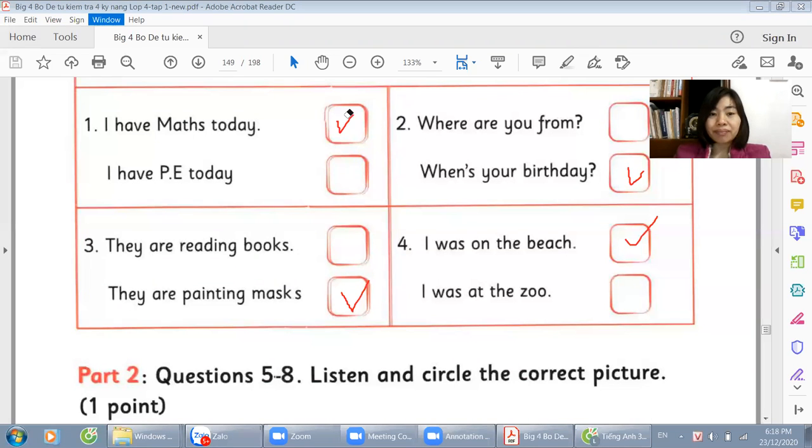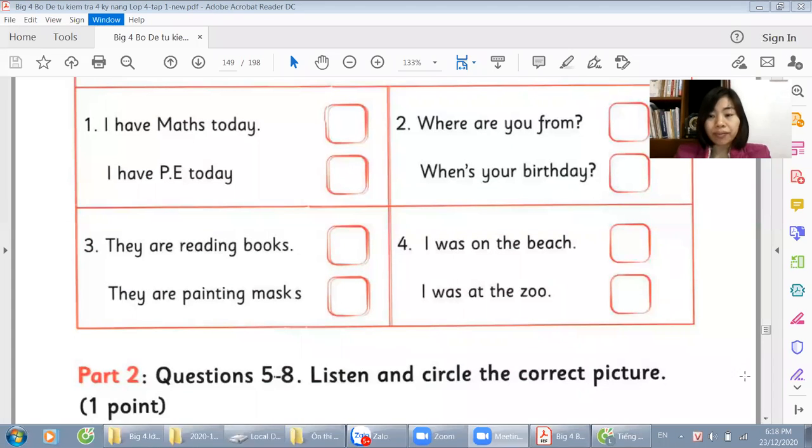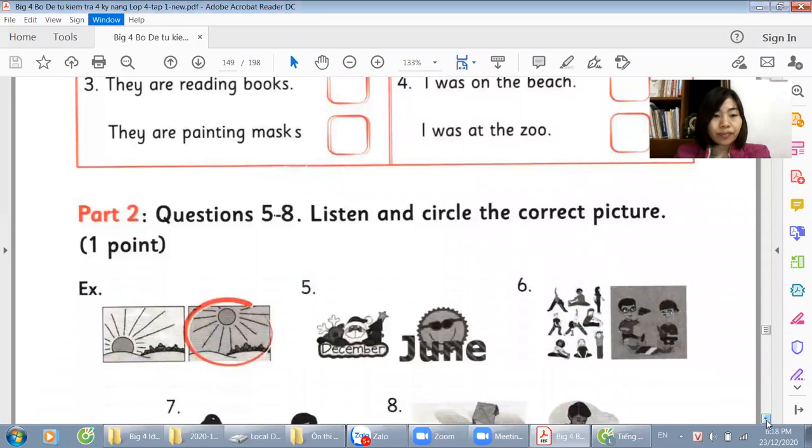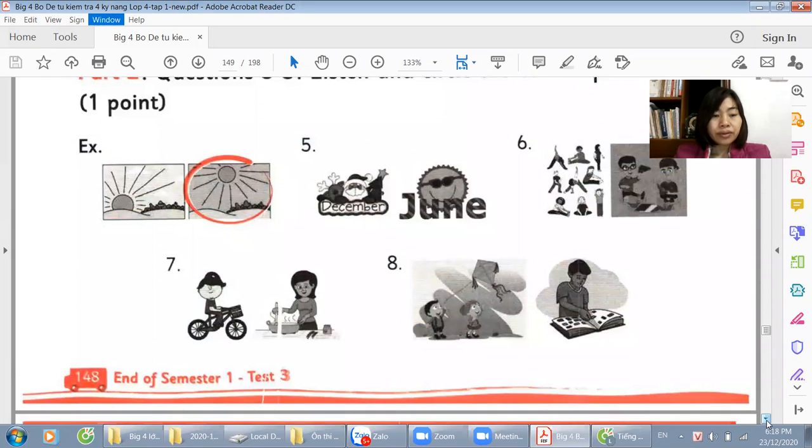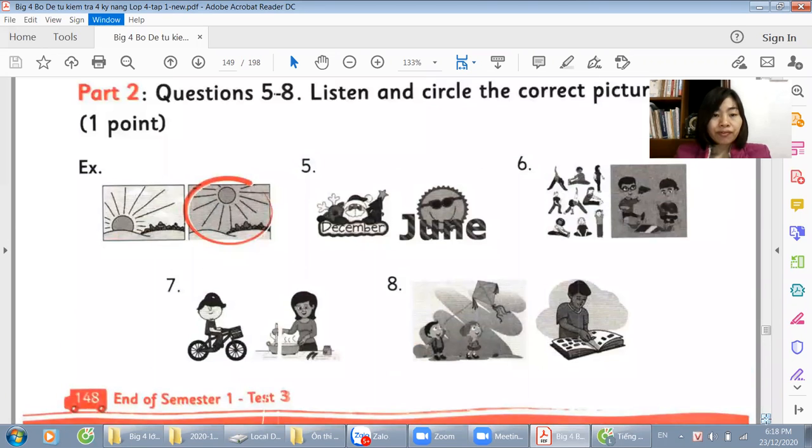Now, come on. Part two. I always have to erase before I can roll down. Part two, five to eight. Listen and circle the right pictures. Example: Good afternoon with circus.